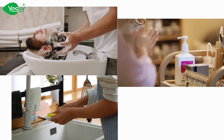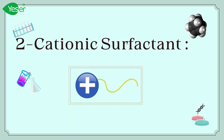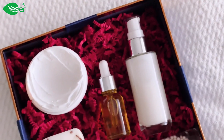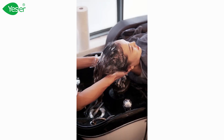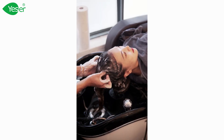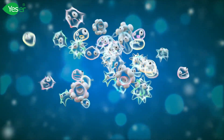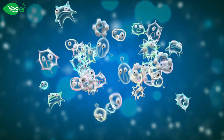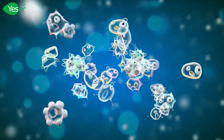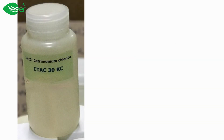Cationic surfactants have a positively charged hydrophilic head. They are often used as conditioning agents in hair care products because they can bind to the negatively charged surfaces of hair and skin, providing a softening effect. They also have antibacterial properties, making them useful in disinfectants and fabric softeners.